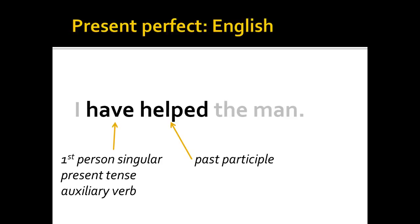Once I've changed it into the past participle, I still need something that agrees with the subject of the sentence, I. So in English, I use the helping verb, the auxiliary verb, have. Essentially, the present perfect tense in English is a two-verb construction. We have the first person singular present tense auxiliary verb have, and that agrees with the subject of the sentence — I have. And then we have the past participle: I have helped the man.